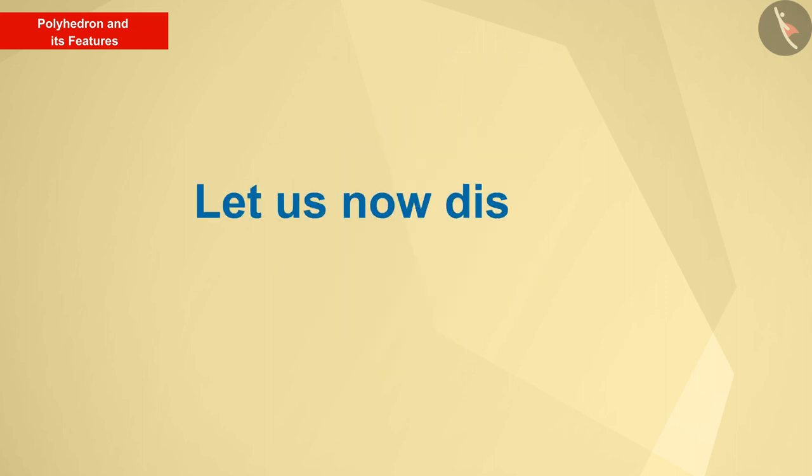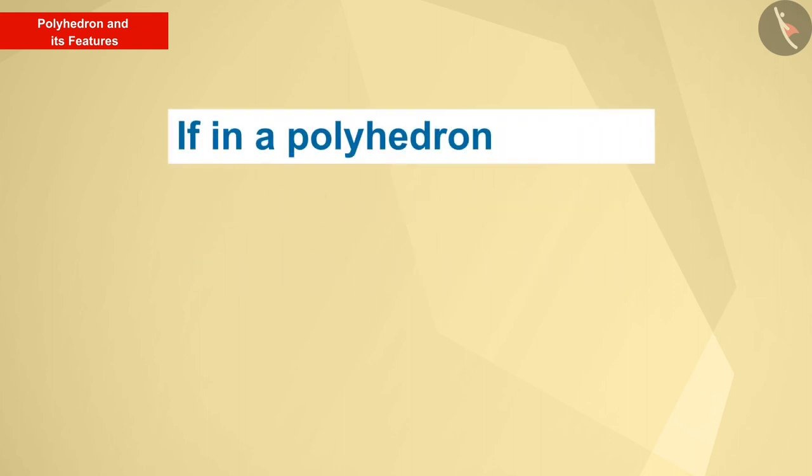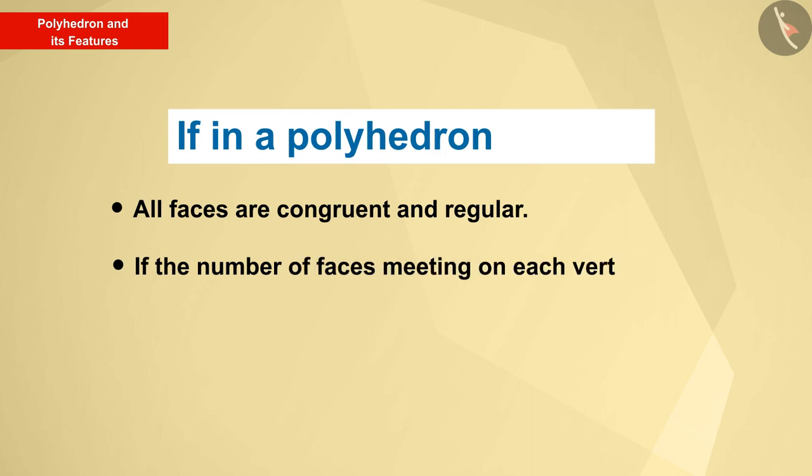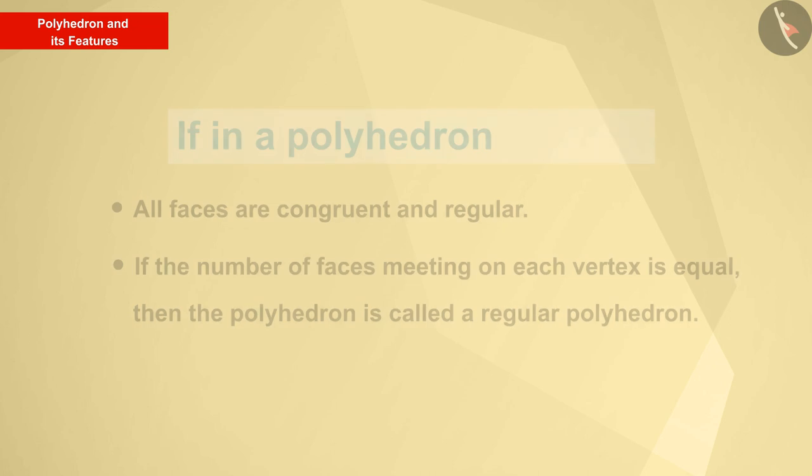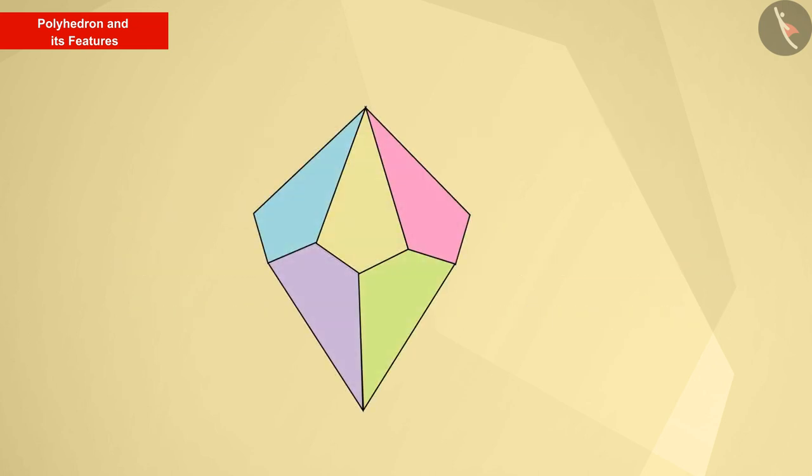Let us now discuss regular polyhedron. If in a polyhedron all faces are congruent and regular, if the number of faces meeting on each vertex is equal, then the polyhedron is called a regular polyhedron. Now the question is, is the shown figure a regular polyhedron?